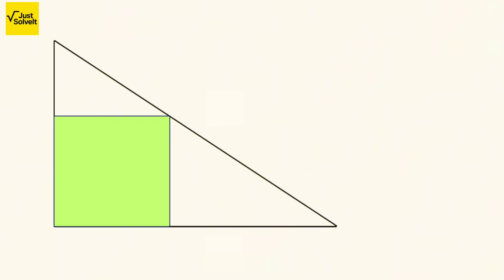Suppose the side length of the square is x. That means the vertical segment above the square is 16 minus x, and the horizontal segment to the right of the square is 24 minus x.